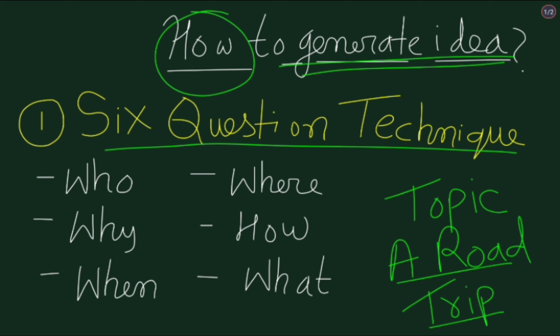The first question is who. By seeing the topic, we will answer the question who — that is, who is traveling with you on that road trip. Are you with your friends or with your family or anyone else? So we will answer that we were traveling with our friends or with our family. This is the first point to write in the essay.